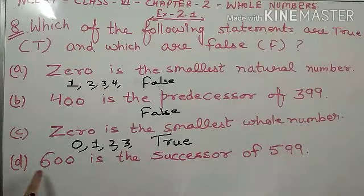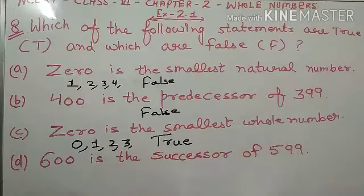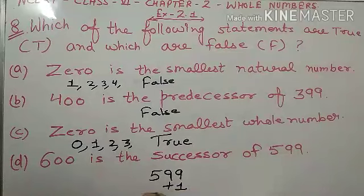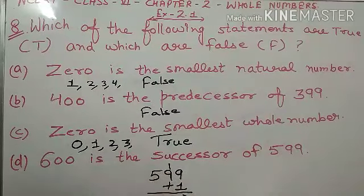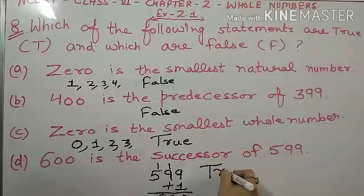Now d part: '600 is the successor of 599.' Successor matlab hoota hai aagye wala number. Agar 599 ka aagye wala number hamei pata karna hai, toh hum us mein one add karte hai. 9 and 1 = 10 carry, 9 and 1 = 10, 5 and 1 = 6. Toh aajaye 600. Iska matlab yhe statement bhi true hai.